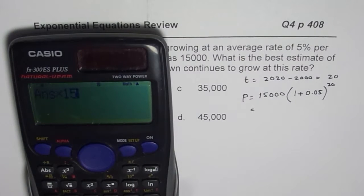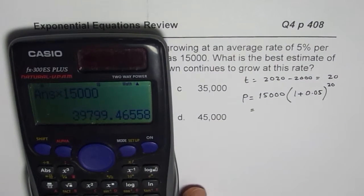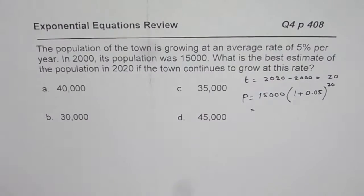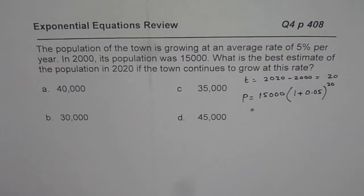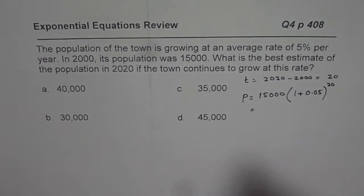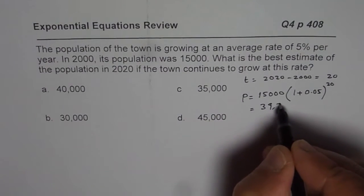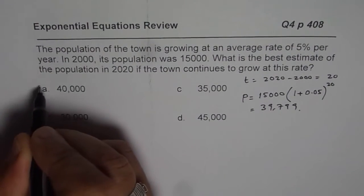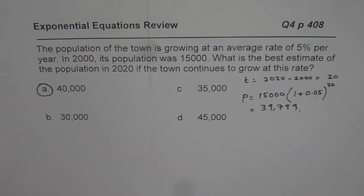So we have around 39,799. So, 39,799, so that is 39,799, which is close to 40,000. So, that is our answer.